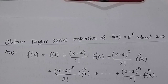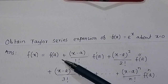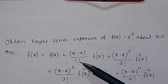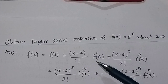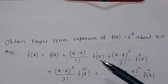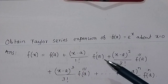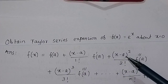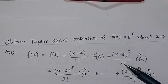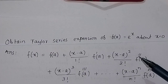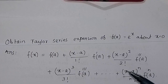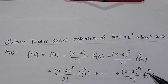From the Taylor series expansion, we know f(x) = f(a) plus (x minus a) divided by factorial 1 times f'(a), plus (x minus a) squared divided by factorial 2 times the second derivative at x = a. Similarly, we find the nth derivative of the function at x = a.